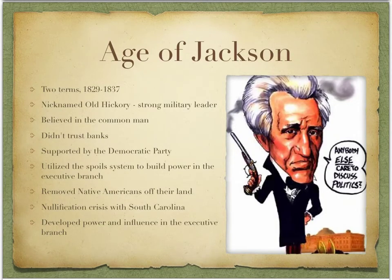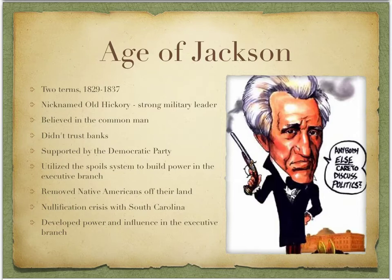This slide is an overview of the highlights of the Age of Jackson — some of the good things and some of the not-so-good things. He served two terms as president and is considered the first common man president. The big topics we'll focus on include the Second Bank, the spoils system, the removal of Native Americans, and the nullification crisis. This picture shows him holding a smoking pistol — he was known to not shy away from duels and reportedly died with a significant amount of lead in his body.